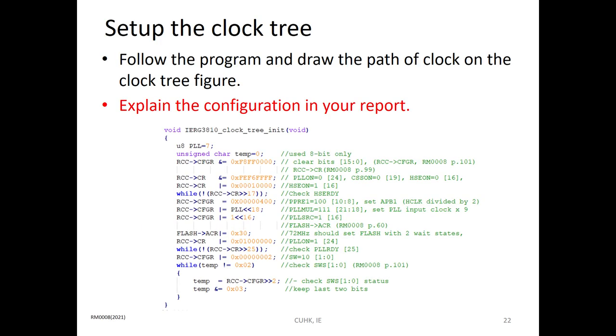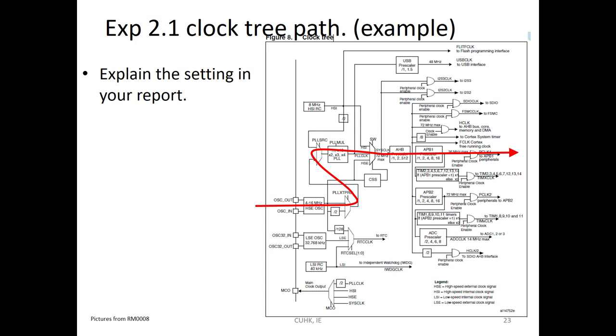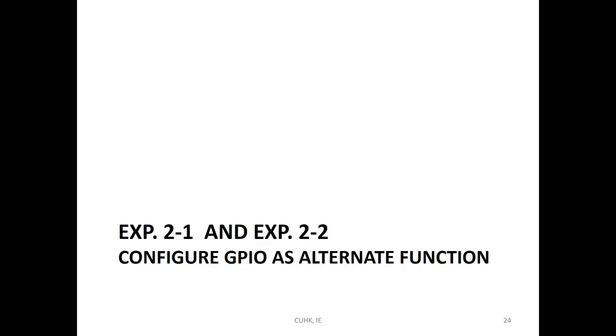Now, experiment 2.1 and 2.2 set up the clock. So, we give you the program. Init the clock. Then, read the data sheet. Understand what the program does. Actually, the path like this. Then, in here, we will use alternative function.